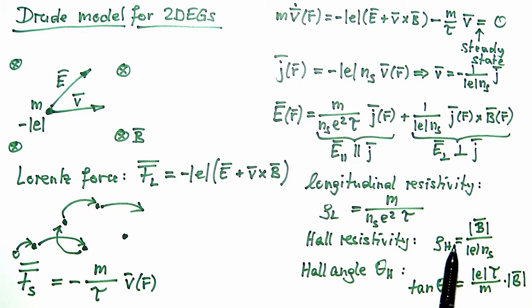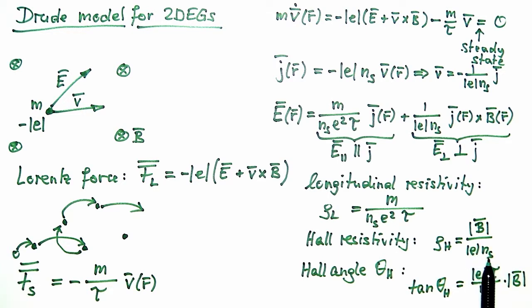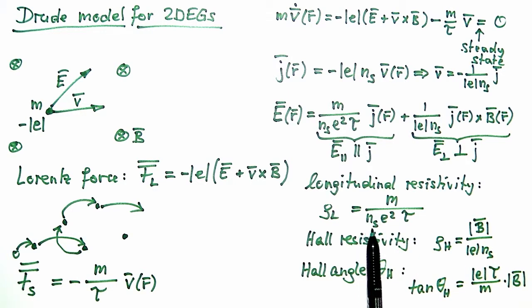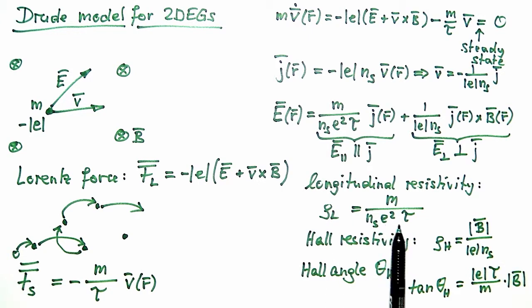These two expressions are very important in practice. The sheet density ns is usually extracted from the Hall slope — the slope of the Hall resistivity versus magnetic field. Once the density is known, it enters the longitudinal resistivity as well, and given the mass and elementary charge, one can determine the scattering time tau in the system.